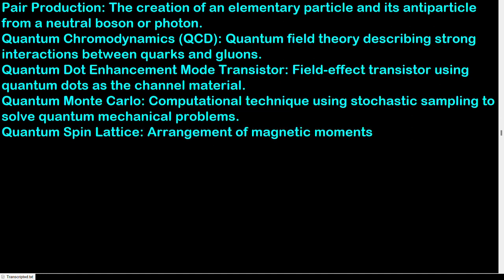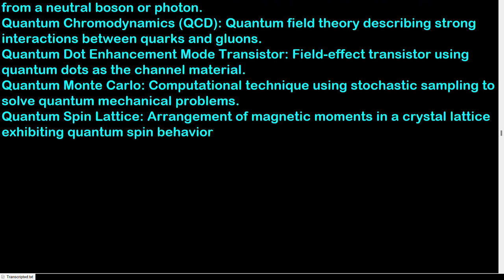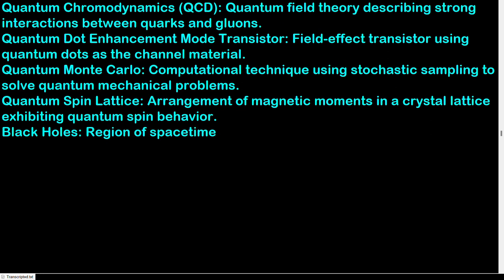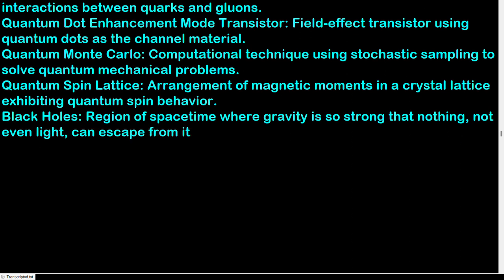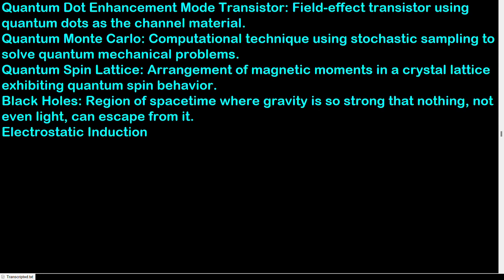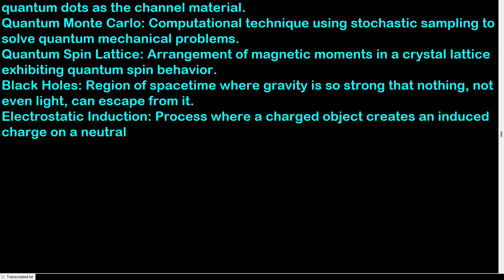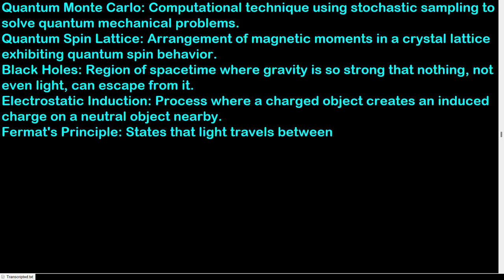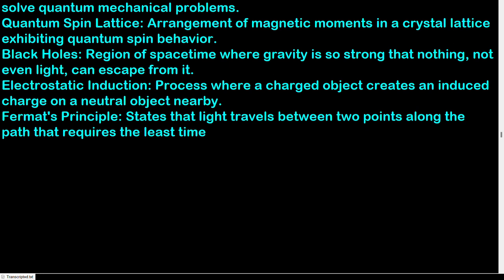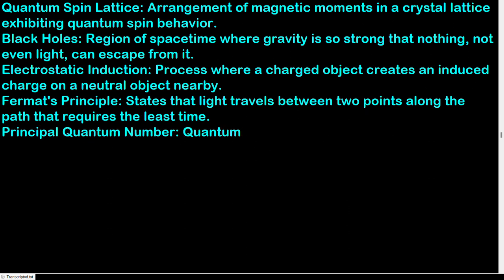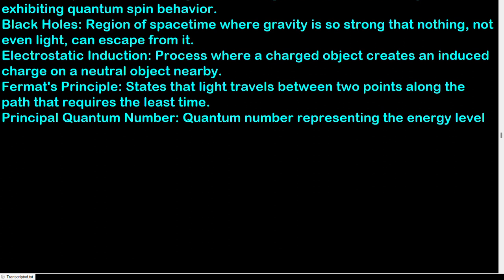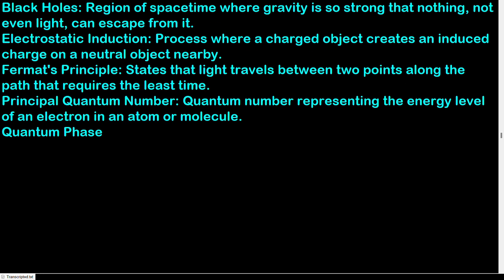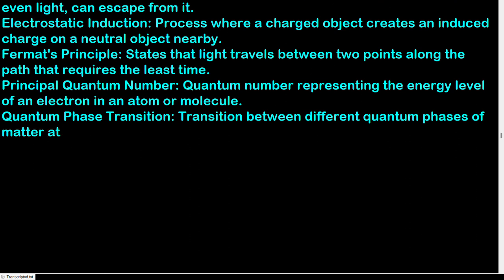Black holes: region of spacetime where gravity is so strong that nothing, not even light, can escape. Electrostatic induction: process where a charged object creates an induced charge on a neutral object nearby. Fermat's principle: states that light travels between two points along a path that requires the least time. Principal quantum number: quantum number representing the energy level of an electron in an atom. Quantum phase transition: transition between different quantum phases of matter at absolute zero temperature.